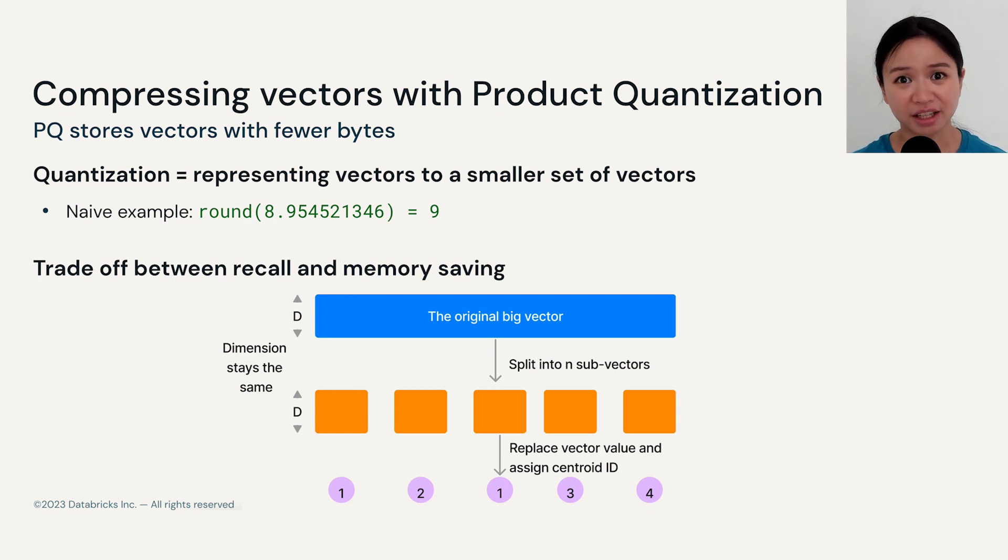Dense embedding vectors usually take up a lot of space. A common method to reduce memory usage is to compress the vectors using product quantization, abbreviated as PQ. This method essentially reduces the number of bytes. Quantization refers to how we represent the vectors using a smaller set of vectors.